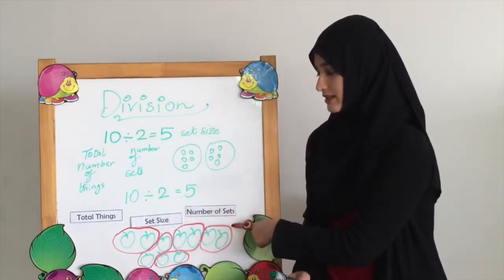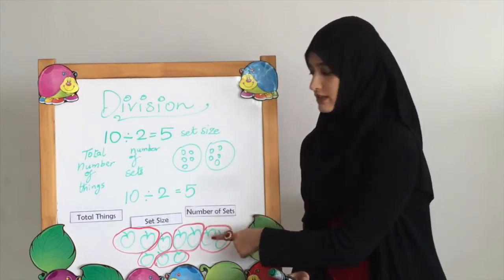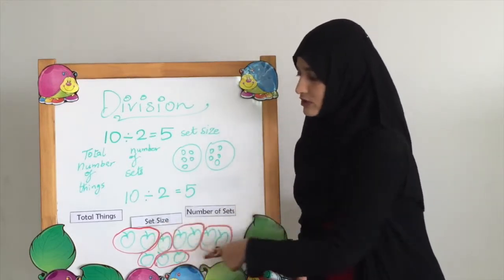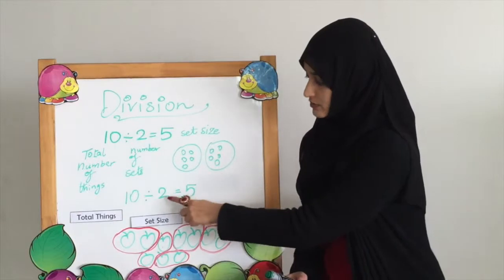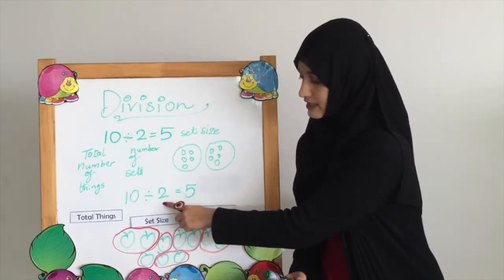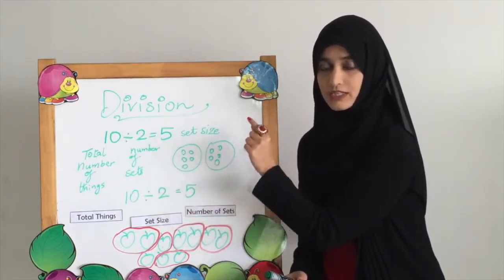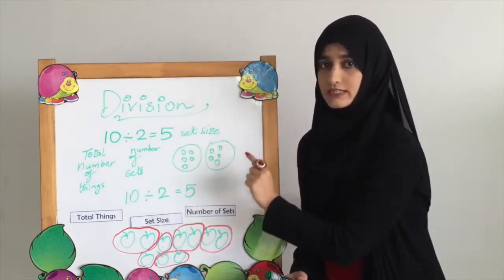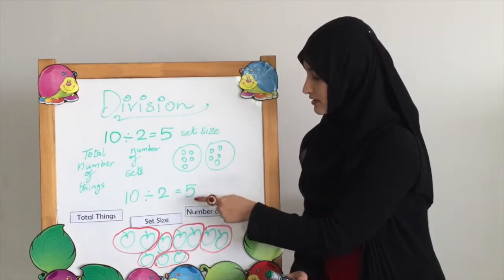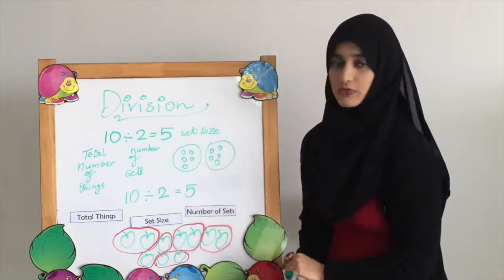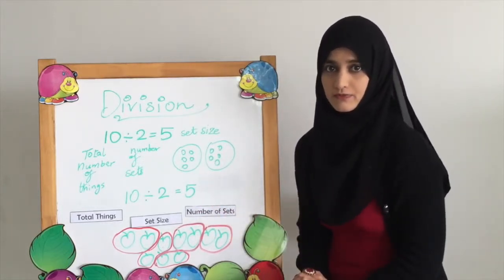In the second method, objects will always be given to you. You just need to look at the second number, count that many objects, and draw a set. Your answer is going to be the number of sets you have in the end.